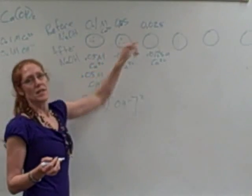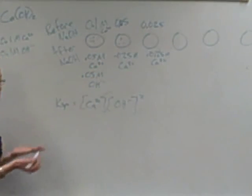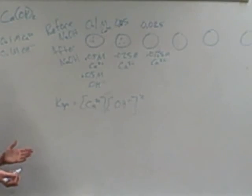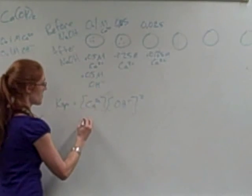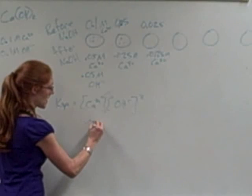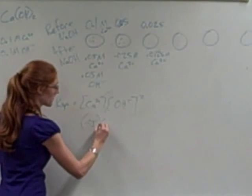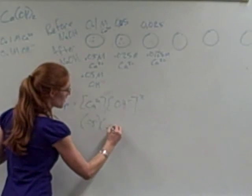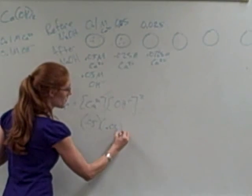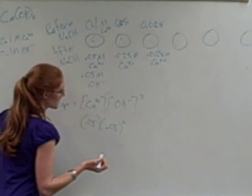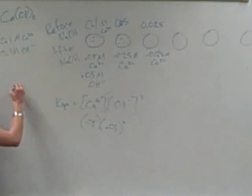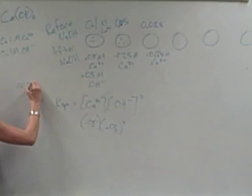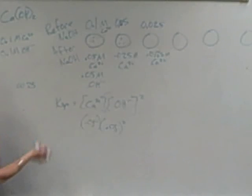We'll calculate what the Ksp will be at either situation, and the actual one will be somewhere in between. So let's see, I'll plug this in. I have 0.05 molar for the calcium, and the hydroxide was 0.05 as well, so 0.05 squared. So I'm going to have 0.05 times 0.05 is 0.0025, and then I'm going to go times 0.05 again.